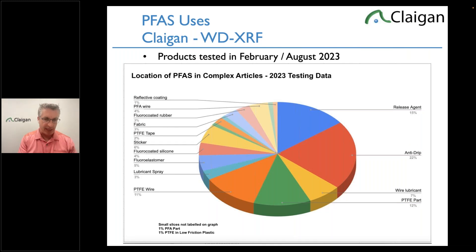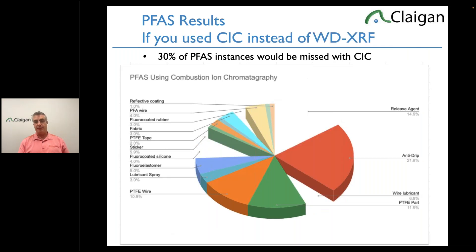This is the testing data from 2023 — all very modern. There are hundreds of products, each having 20 to 1,000 components, covering electronics, medical devices, professional and laboratory equipment, clothing, and more. If we were using combustion ion chromatography, we'd miss about 30% of the instances. So if it's tested in China, about 30% of instances get missed. Combustion ion chromatography has a big problem with surface coatings — release agents, wire lubricants, fluorocoated silicone — all trouble.